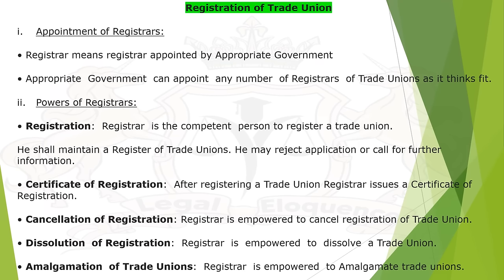Registration of Trade Union: appointment of registrar — registrar means registrar appointed by the appropriate government; the appropriate government can appoint any number of registrars as it thinks fit. Powers of registrar: registration — the registrar is the competent person to register the trade union; shall maintain a register of trade unions; may reject application or call for further information; issue certificate of registration after registering a trade union. The registrar is also empowered to cancel registration, dissolve a trade union, and amalgamate trade unions.